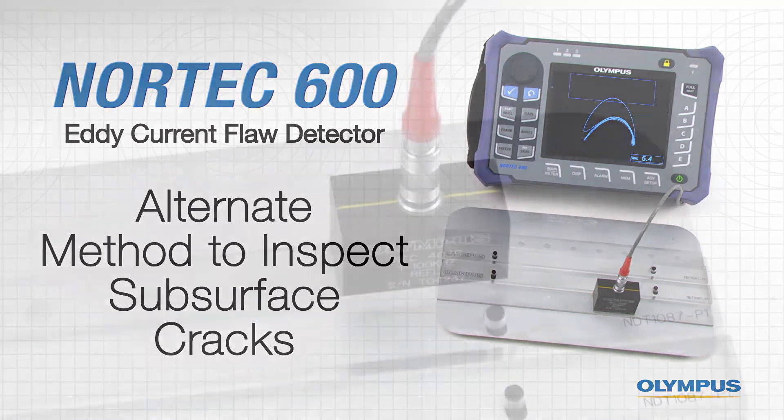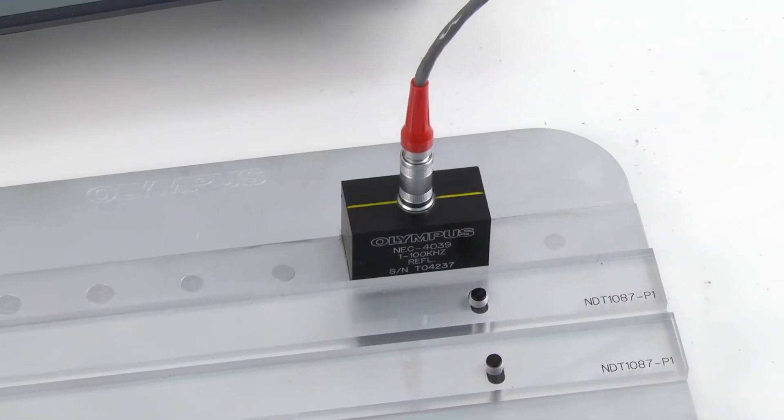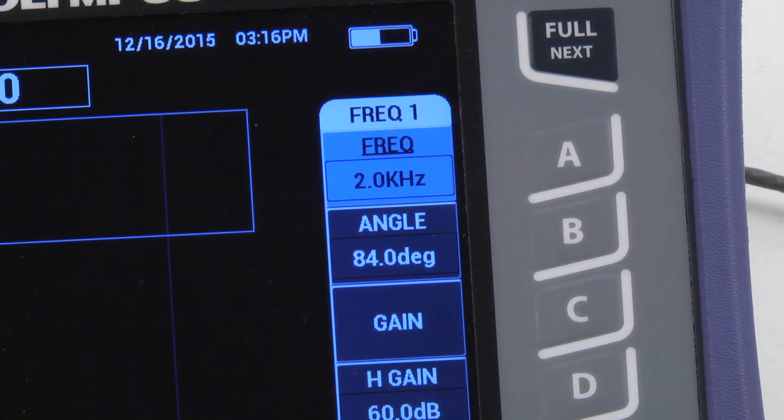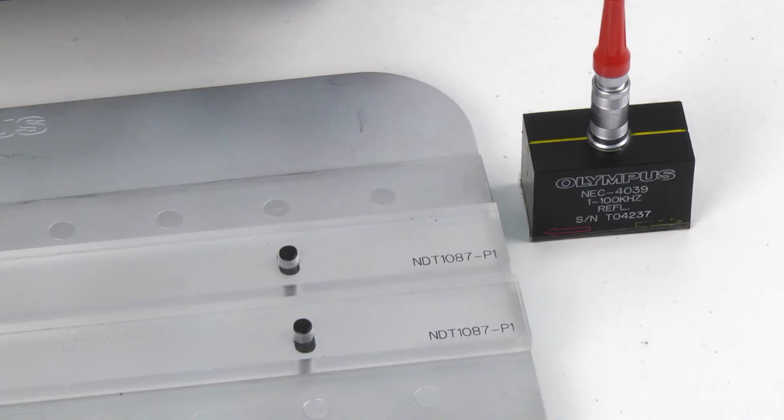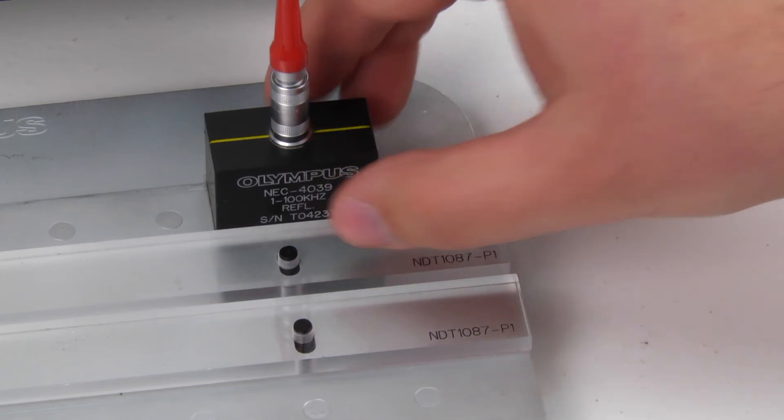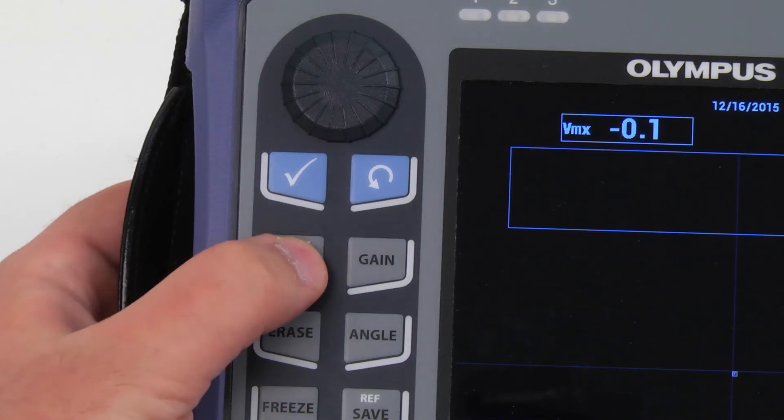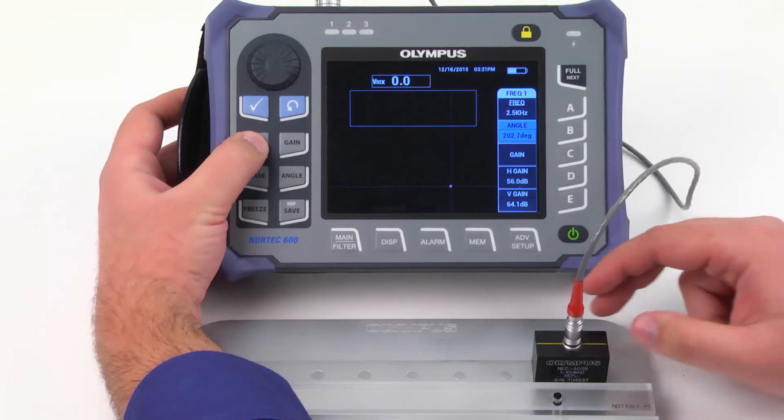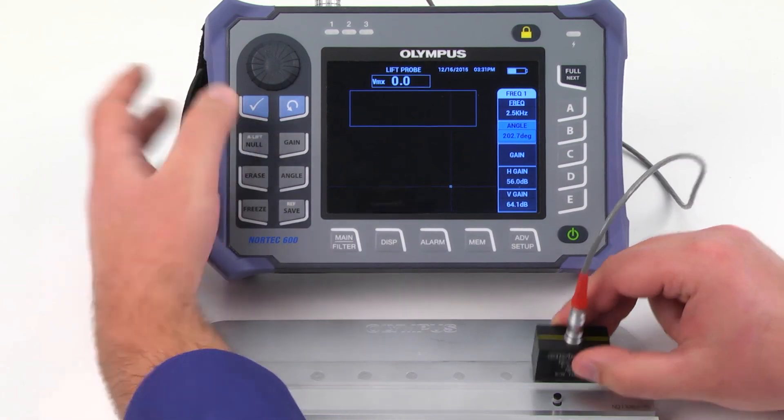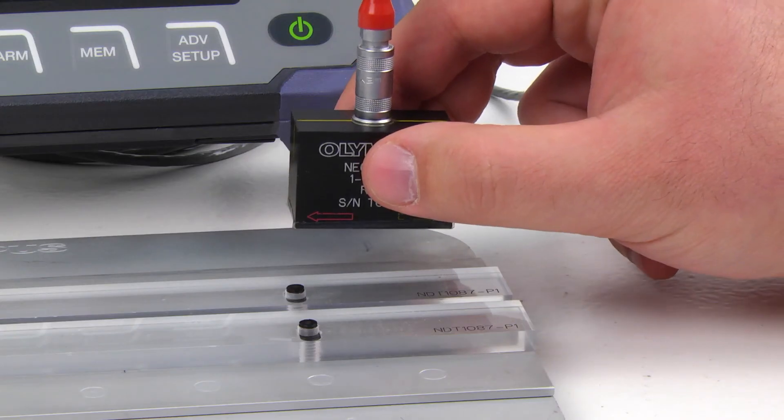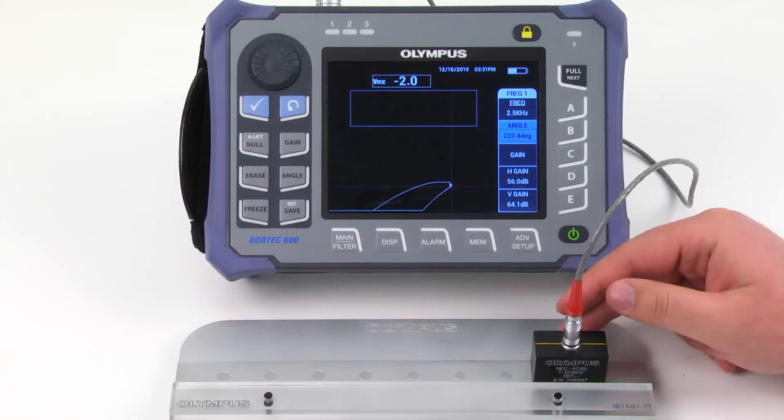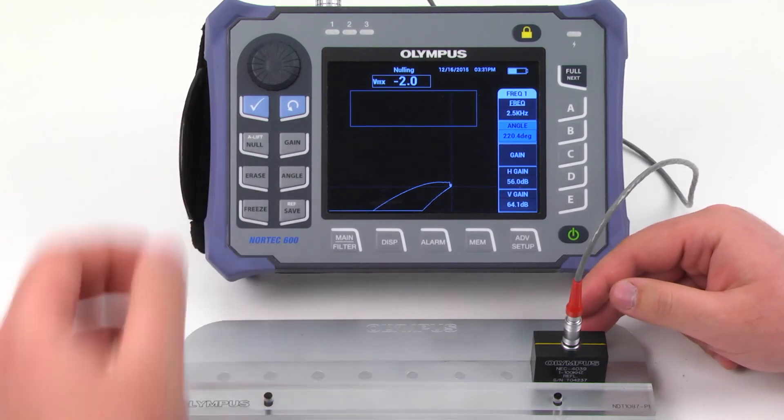Another way to inspect subsurface cracks is to use a sliding probe. Set your frequency to 2.5 kHz. Place the sliding probe on a defect-free area of the calibration standard. Press and hold the NULL key. This will activate the auto liftoff function. When you hear the beep, lift the probe. Place the probe back on the defect-free area and press NULL.